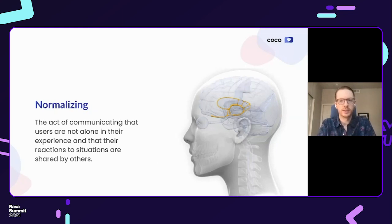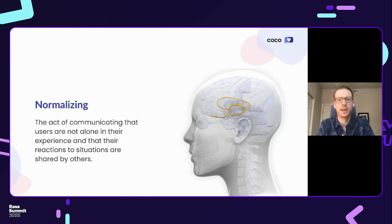We use a variety of techniques from clinical psychology to improve the user's affective state. Normalizing is one of these — it is used to assure the client that their feelings and their situation are shared by others. This often comes as a relief to clients who may otherwise feel abnormal or isolated. This technique is generally applied as a motivational interviewing style but is also applied in cognitive behavioral therapy as a way to help the client gain awareness about how perceptions of events impact their emotional responses.